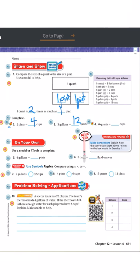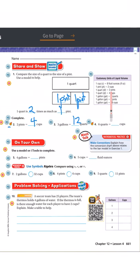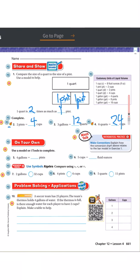Number four: I have six quarts — how many cups is that? One quart is the same as four cups. So six quarts times four equals 24 cups. It's really just a matter of looking at the conversion chart and using it to change one thing into another, knowing what you need to multiply.